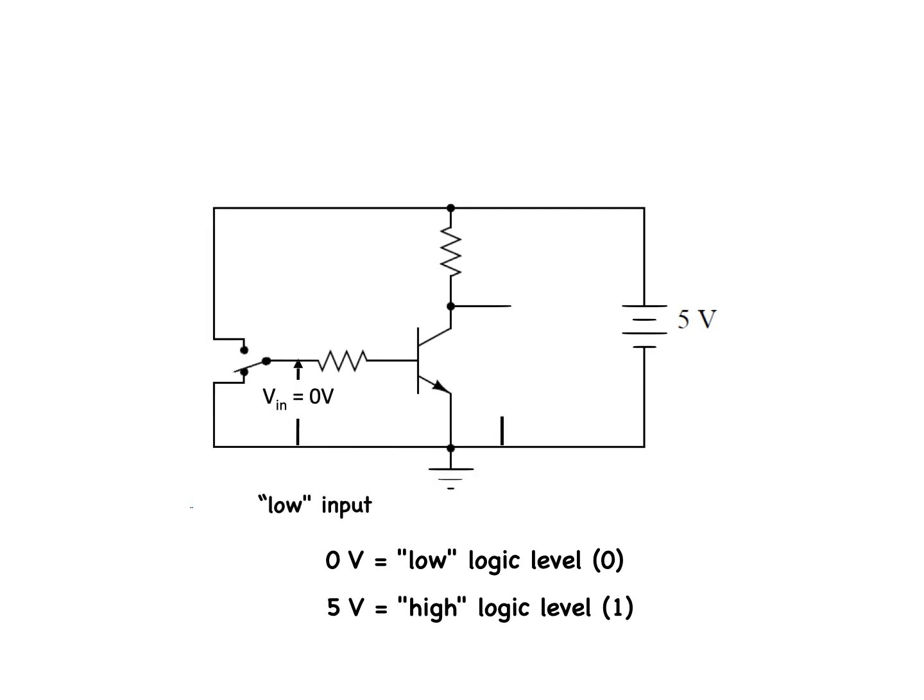Moving the switch to the other position, we apply a binary zero to the input and receive a binary one at the output, putting the transistor into cutoff. What we've created here with a single transistor is a circuit generally known as a solid state logic gate, or simply a gate. A gate is a special type of amplifier circuit designed to accept and generate voltage signals corresponding to binary ones and zeros. As such, gates are not intended to be used for amplifying analog signals. Used together, multiple gates may be applied to the task of binary number storage (memory circuits) or manipulation (computer circuits), each gate's output representing one bit of a multi-bit binary number. Right now, it is important to focus on the operation of individual gates.